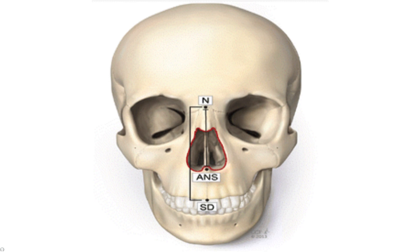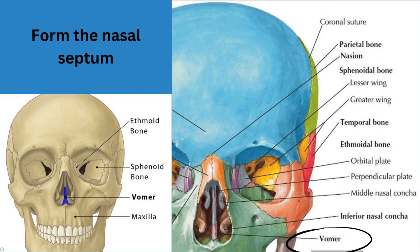Next is the vomer, which forms the nasal septum. The way to remember it: the word 'septum' ends in 'm' and the word 'vomer' has an 'm' in the middle. The 'm' in the middle means we're speaking about the nose, which is found in the middle of the face, and the structure in the middle is the nasal septum.